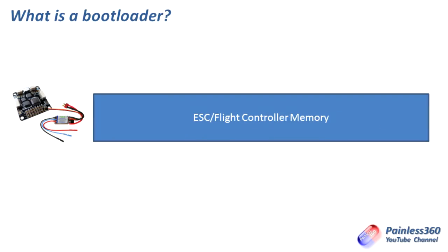Here on the screen is an image of the memory that's inside something like a flight controller or an ESC. This is the available memory that we can store information in, and typically there are two things stored inside this memory. The first one is the firmware — that's the firmware that actually runs. With a flight controller, that might be something like MultiWii firmware, CleanFlight, OpenPilot, BaseFlight, or Mission Planner for an APM. It's the majority of the space, and that's the program the device is going to run when operating normally.